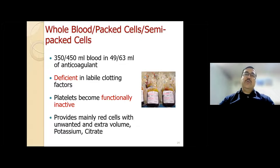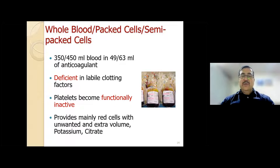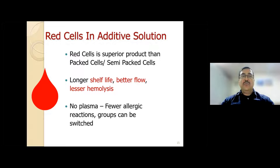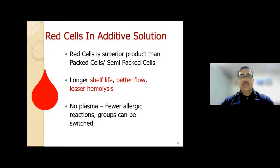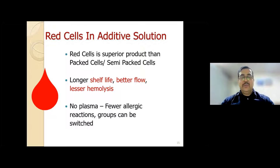The first component is whole blood—or what used to be called packed cells or semi-packed cells—which is 350 or 450 ml of blood in an appropriate anticoagulant. But it is deficient in clotting factors and platelets become functionally inactive; what it mainly provides are red cells along with unwanted extra volume, potassium, and sodium. We now have a much better product called red cell in additive solution (SAGM—saline, adenine, mannitol, and glucose). At the blood bank, the entire plasma is removed and cells are suspended in SAGM, extending shelf life from 35 to 42 days, improving flow, and reducing hemolysis.